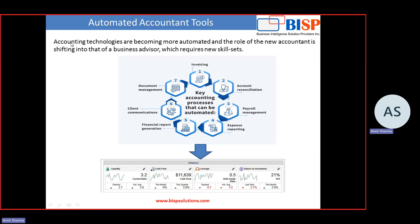As part of your job role, accounting technologies are becoming more automated and the role of the new accountant is shifting from an accountant to a business advisor. When you join any multinational company, an accountant is also somebody who gives advice to management. When things are going to be automated, you are left with two choices: either you leave your job or you acquire new skills. I'm sure you all would like to acquire new skills.